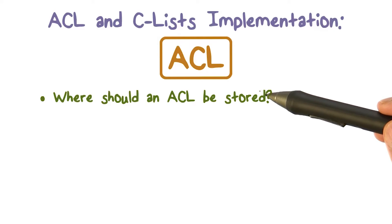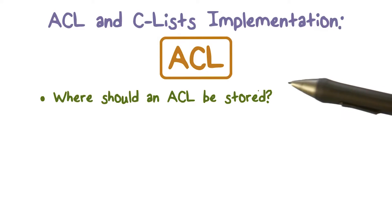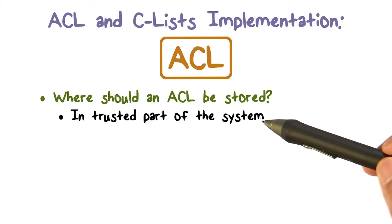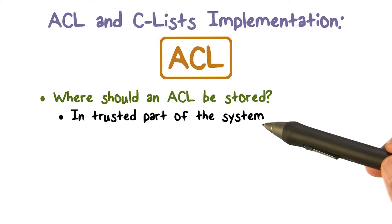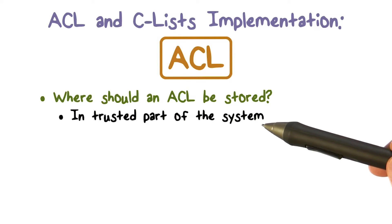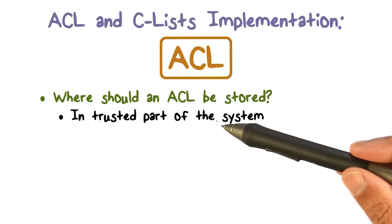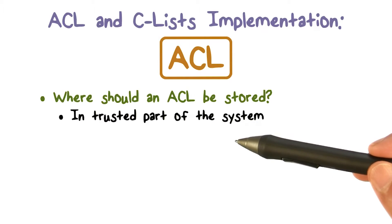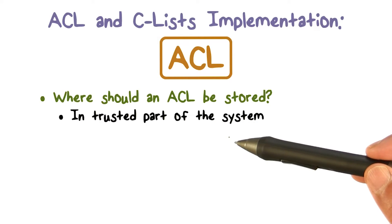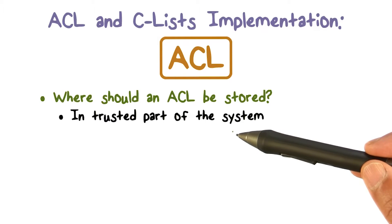So where should the ACL for an object O be stored? First of all, this has to be stored in the trusted part of the system — in the operating system or the trusted computing base — because it actually determines who can access a resource that needs to be protected. If it's not in the trusted part, then some untrusted code or application could potentially change it.